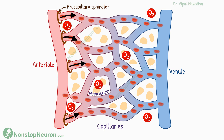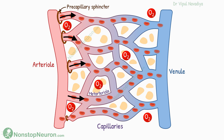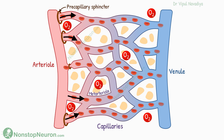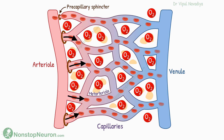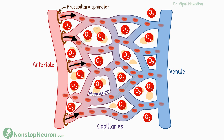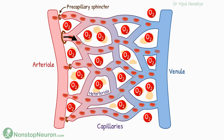Or, in simple words, we can say more capillaries are open at any given time, so the cells get more oxygen. Contrarily, if there is enough oxygen in the surrounding, the cycle becomes slow.